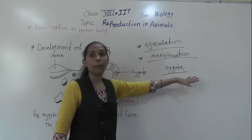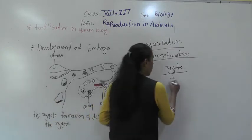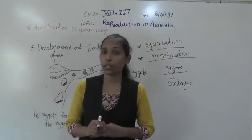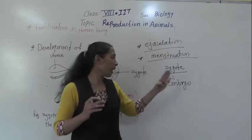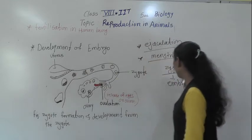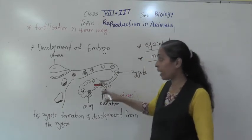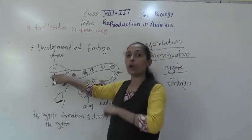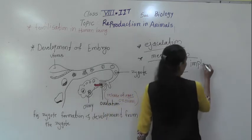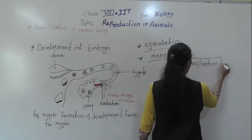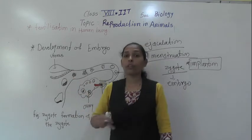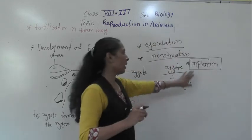So the zygote rapidly and repeatedly divides, forming a number of cells or a ball of cells, which then begin to form a group of cells that starts forming tissue and the organs of the body. This developing structure of the zygote is called an embryo. After that, the embryo gets embedded into the uterus for further development, and that process is called implantation. So implantation means the embryo is embedded into the uterus for further development.